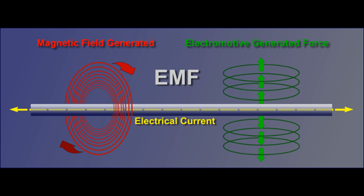Now let us learn about electromotive force, which is also called EMF, denoted and measured in volts. It is the voltage developed by any source of electrical energy such as a battery or dynamo. It is generally defined as the electrical potential for a source in a circuit.